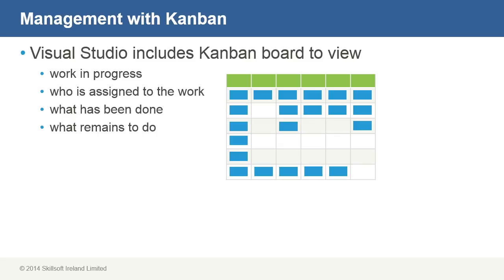Microsoft Visual Studio features a Kanban board, similar to real-life boards used to manage scheduling and workflow. The Kanban board allows managers and teams to view work in progress, who is assigned to the work, what has to be done, and what remains to be done. Managers or teams can change the Kanban board to better reflect their work preferences, and the board can be conveniently accessed from the team's backlog page.